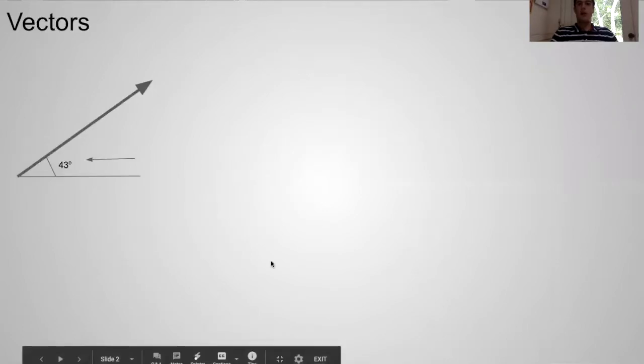What is a vector? A vector is a quantity that is fully described by both magnitude and direction.